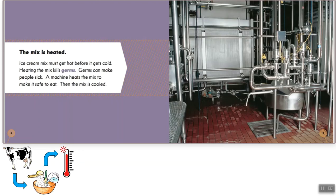The mix is heated up. Ice cream mix must get hot before it gets cold. Heating the mix kills germs. Germs can make people sick. A machine heats the mix to make it safe to eat. Then the mix is cooled. So I went from getting cow's milk to adding ingredients to heating it up. So far we have three events in our sequence of events.